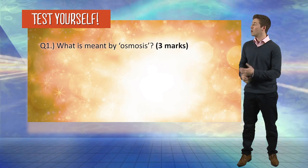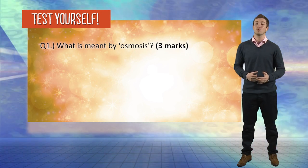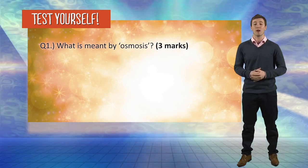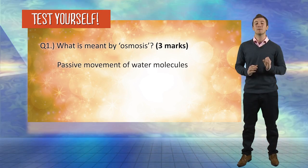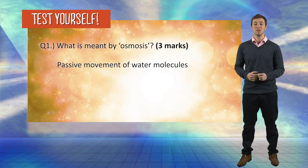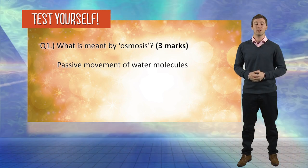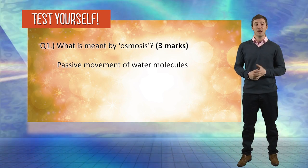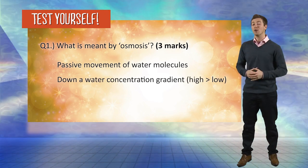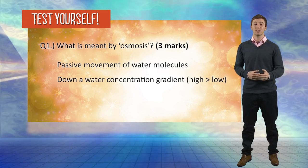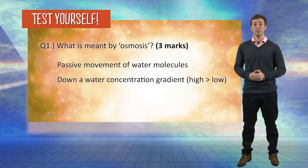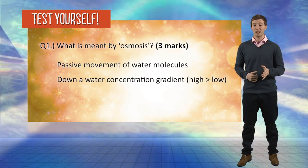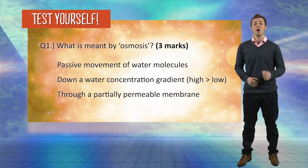Question number one: what is meant by osmosis, for three marks? Osmosis is the passive movement of water molecules. It takes place down a concentration gradient, from high to low, and this happens through a partially permeable membrane.